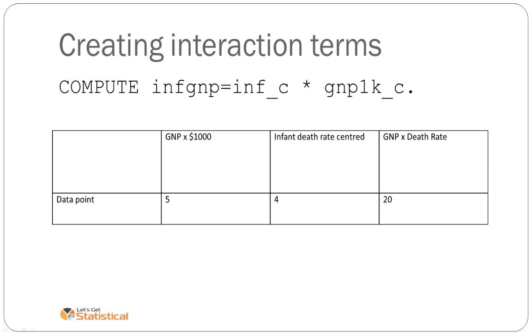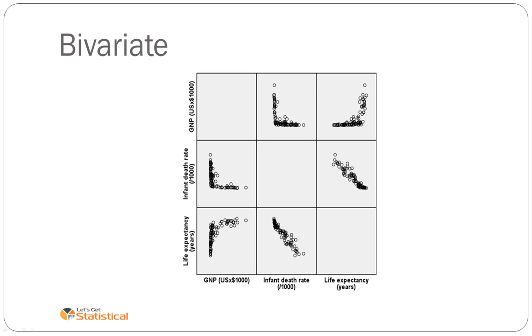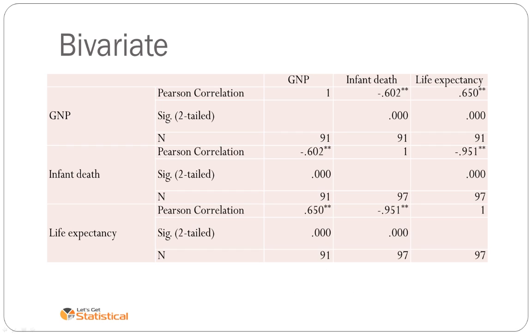To compute the interaction term, we're going to multiply each of the levels of IV1 with each of the levels of IV2 to create a third variable, that is the SPSS syntax above. In this case for a country that had GNP of 5 and infant death rate of 4, their new interaction term would be 20. We then run the bivariate variables as per usual. As we do it, we inspect whether the IVs significantly predict the DVs. In this case there are some incredibly strange relationships, but that's not unexpected. We would comment on them the normal way.